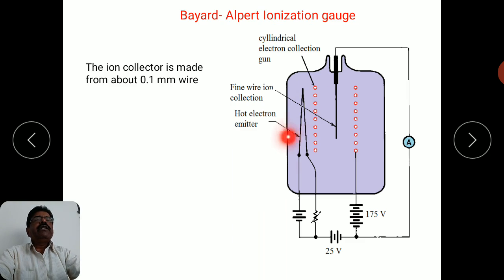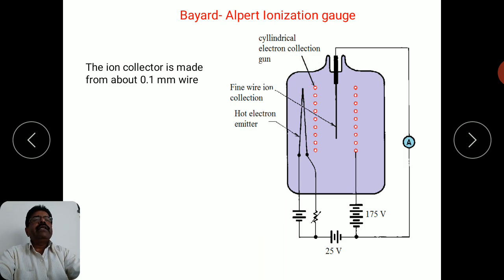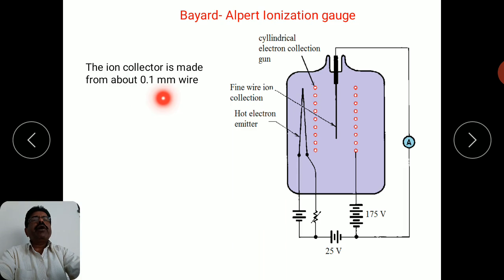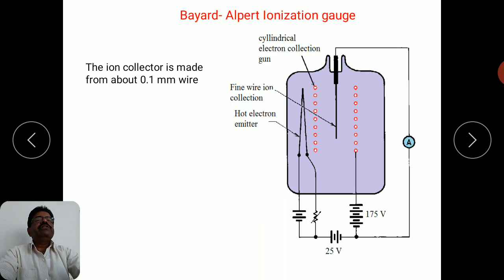In this particular design, you will see that there is a cylindrical electron collection gun where electrons are collected, kept at high positive potential. The centrally placed very thin wire acts as an ion collector. This fine wire ion collector is made from about 0.1 millimeter diameter wire, and it is kept at negative potential so that ions can be collected.